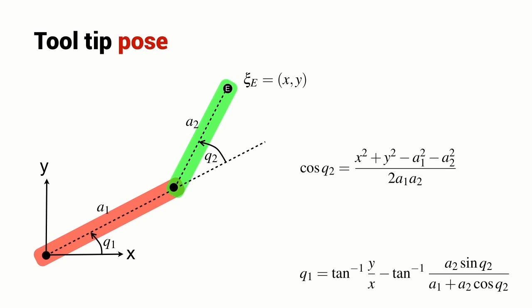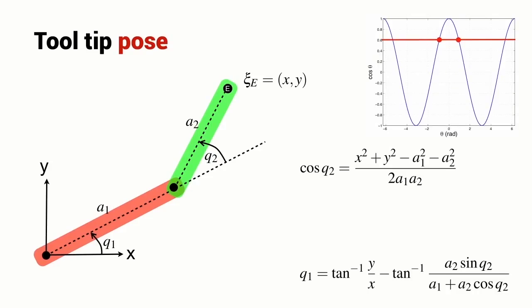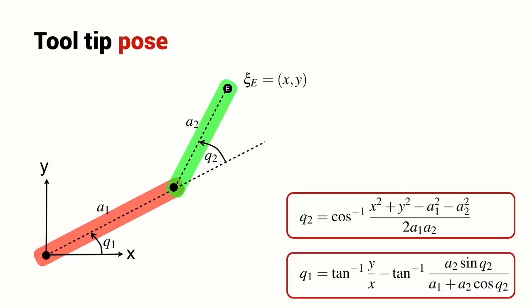So let's summarize what it is that we have derived here. We have an expression for the cosine of Q2 and we have an expression for Q1. Now the cosine function is symmetrical about 0. So if we know the value of the cosine of Q2, then there are two possible solutions, a positive angle and a negative angle. We're going to explicitly choose the positive angle, which means I can write this expression here and now we have what we call the inverse kinematic solution for this two-link robot.